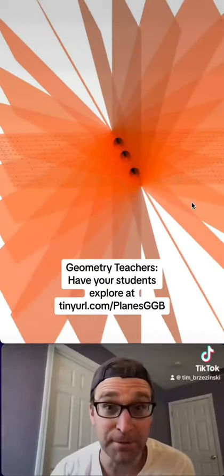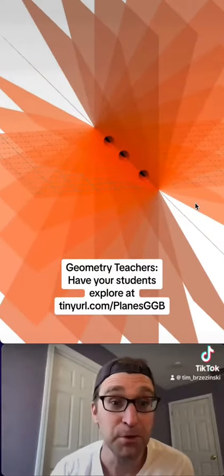That's why when we name a plane in Euclidean geometry, we need three non-collinear points to name that plane. Because if we have three collinear points, we have infinitely many planes that pass through those three collinear points.